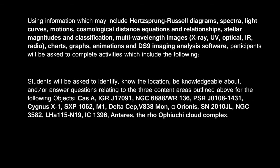Every year there are 16 new deep sky objects, and those deep sky objects are all related to Type 2 stellar evolutionary sequences.